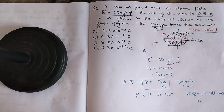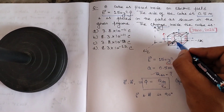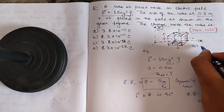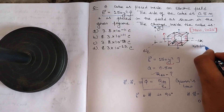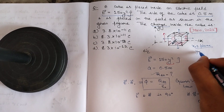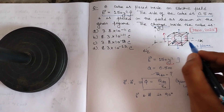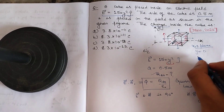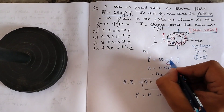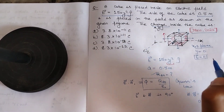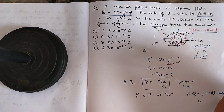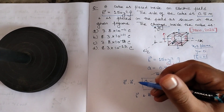Now considering the bottom face: this face lies at the exit plane where y = 0. At this plane the value of the electric field is zero, because the electric field is a function of y (E = 150y²). So this face also does not contribute towards the flux.